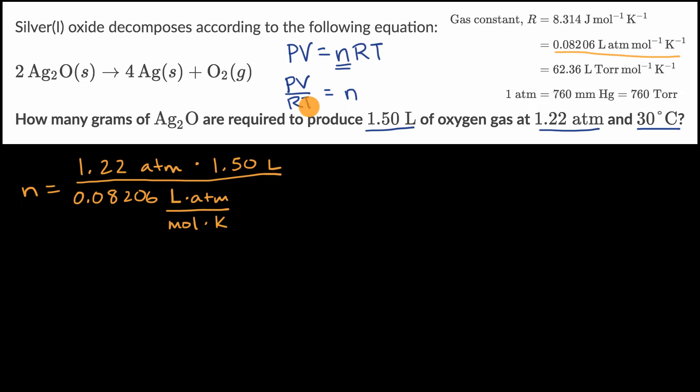Then we multiply by the temperature in Kelvin. They only gave us two significant figures, so let's add 273 to convert. This is 303 Kelvin.